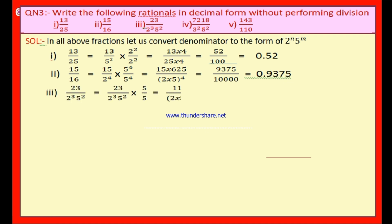Third bit: 23 by 2 cube × 5 square. The denominator is 2 cube × 5 square. To make the exponents of both 2 and 5 equal, let us multiply numerator and denominator by 5. Numerator becomes 23 × 5 = 115. Denominator becomes 2 cube × 5 cube = (2 × 5) cube = 10 cube = 1,000. Since there are 3 zeros, there should be 3 decimal places. Therefore the answer is 0.115.